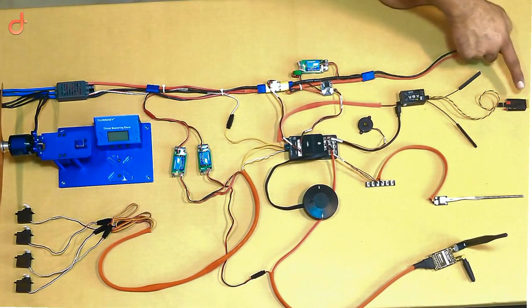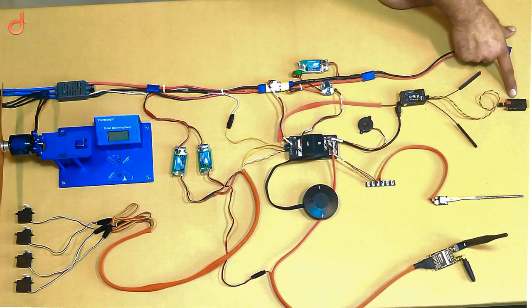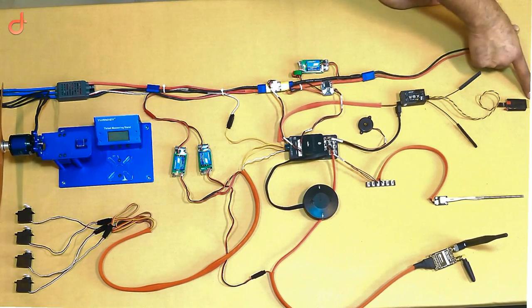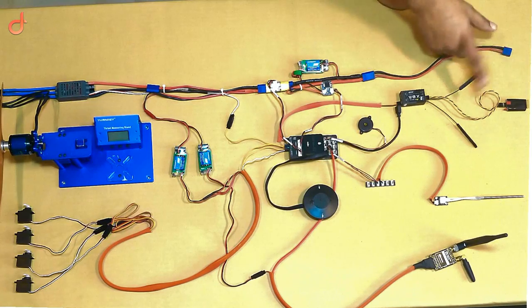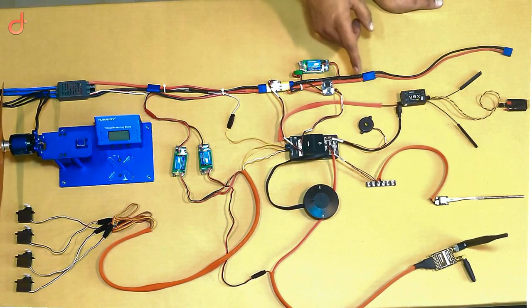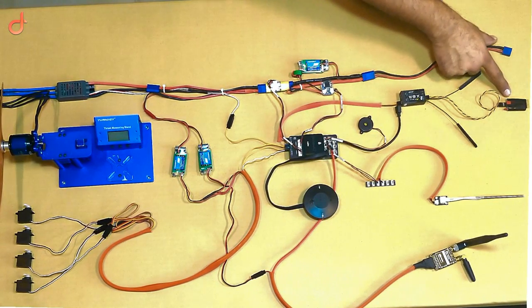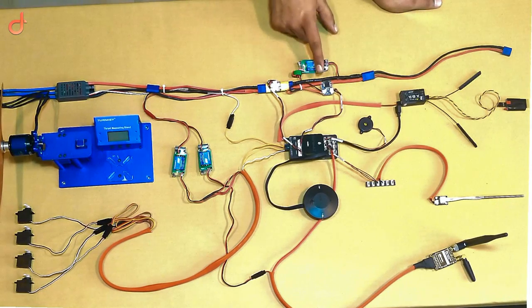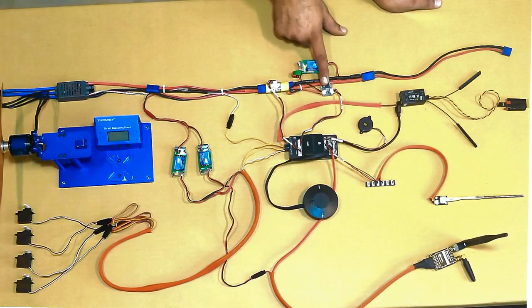Over here, we are using a FRSky voltage sensor. This is going to be inserted into the batteries to get live voltages. You can always compare the voltages that you are receiving on your FRSky Taranis and at the same time on your mission planner through RFD 900.